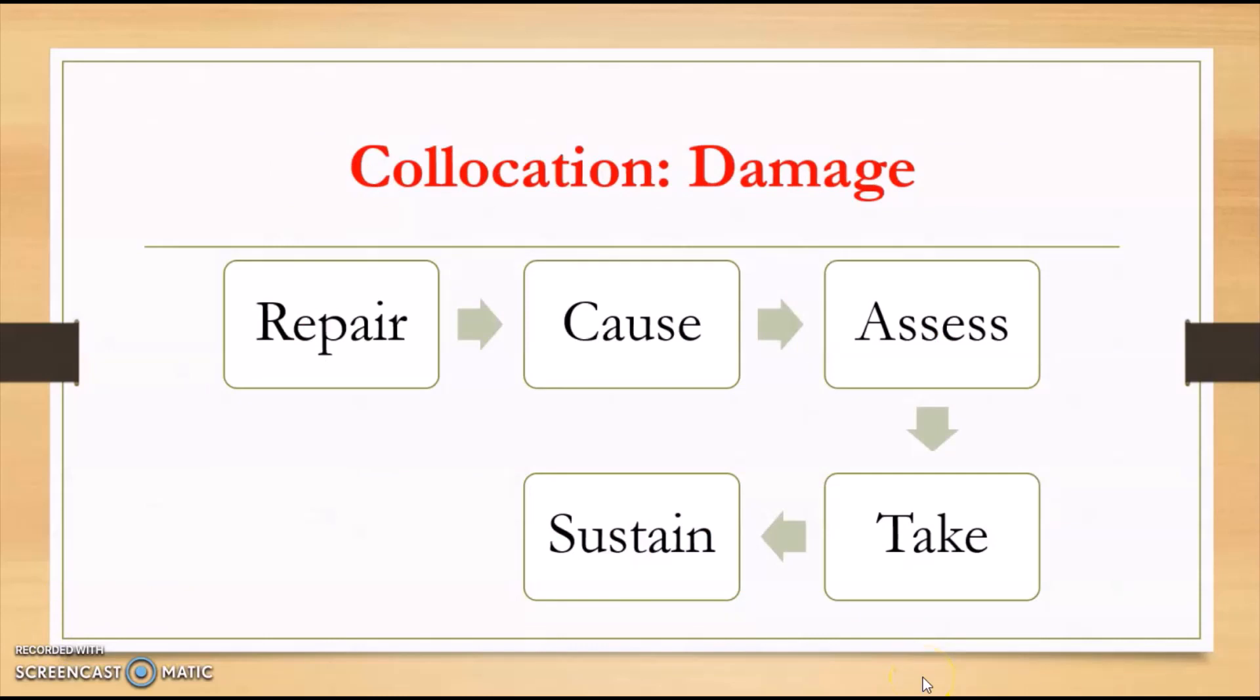You are tested on different language skills. One of the questions can be on collocations. Collocations means compatibility of two words. For example, one word's compatibility with another word. Here the word given is damage. There are five other words on my screen and you again have to pick the odd one out. You can say repair damage, cause damage, assess damage, and sustain damage. But the phrase take damage is the odd one out. You cannot say take damage.